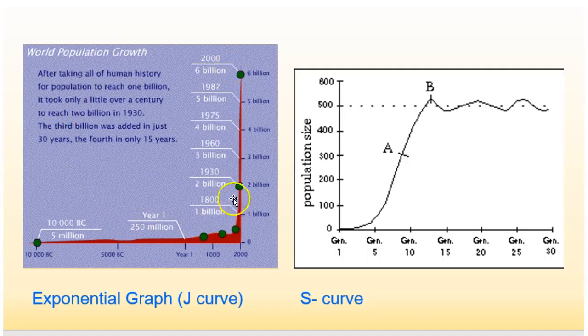Now an example of this is the human population up until now. We've actually increased in such a high rate that it forms a J curve on a graph.